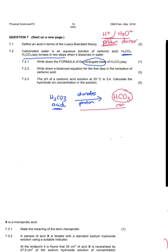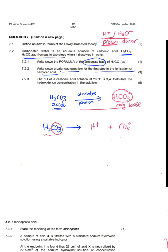Going to 7.2.2: write down a balanced equation for the first step in the ionization of carbonic acid. Carbonic acid H2CO3, when it ionizes, breaks up into its respective ions — hydrogen ions H⁺ and the carbonate ion CO3²⁻. Checking the balance: two hydrogens on the left gives two hydrogens on the right, and one carbonate on each side. So: H2CO3(aq) → 2H⁺(aq) + CO3²⁻(aq). A mark is given for each ion and a third mark for balancing.